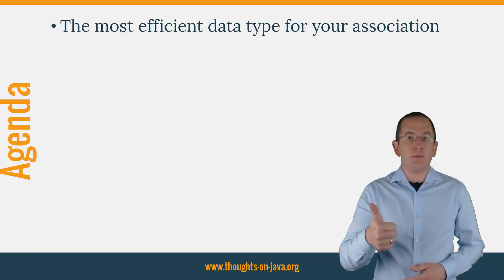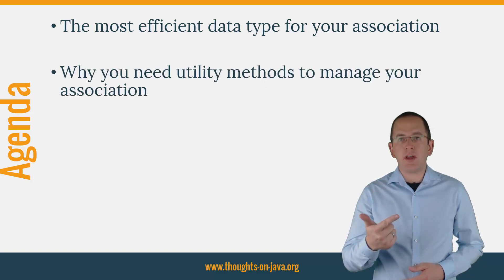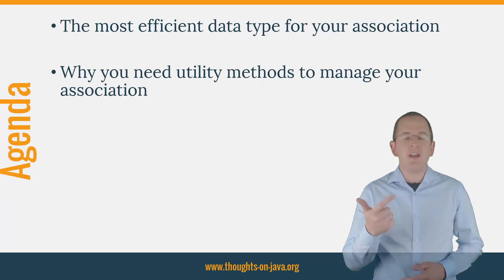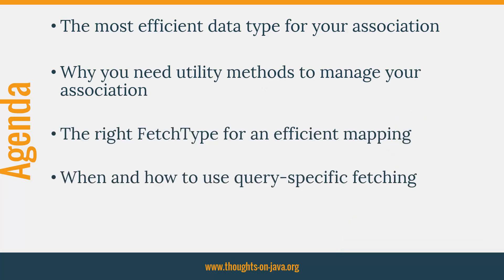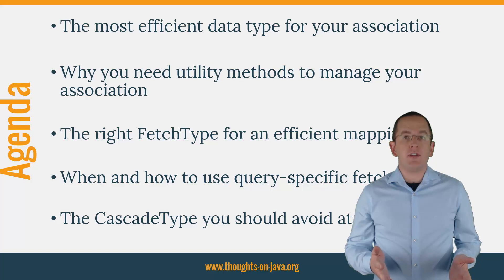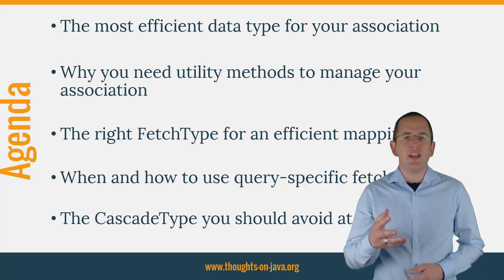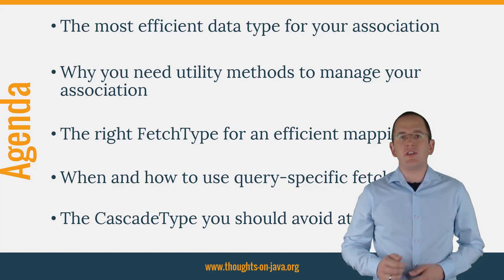You will learn the most efficient data type for your association, why you need utility methods to manage your association, the right fetch type for an efficient mapping, when and how to use query-specific fetching, and the cascade type you should avoid at all costs. I will not dive into the details of basic many-to-many mappings. If you are not exactly sure how to create such a mapping, please take a look at the many-to-many section in my association mapping guide. I will add a link to it in the video description.